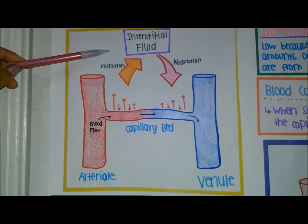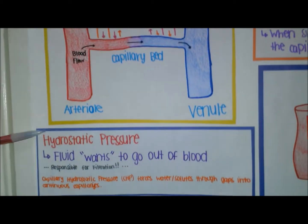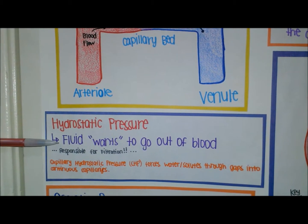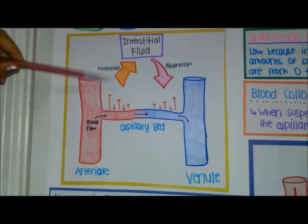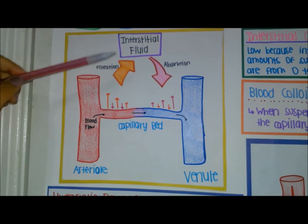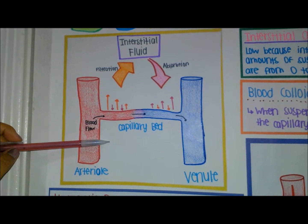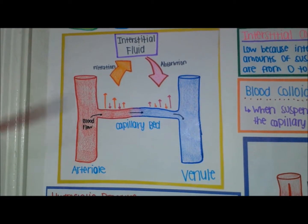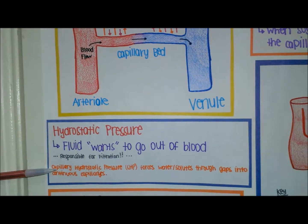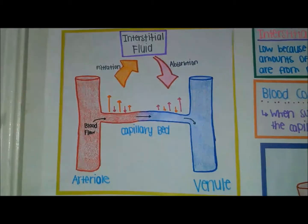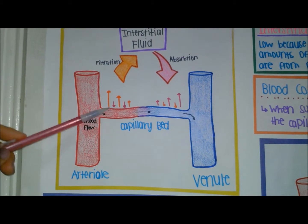As you can see, filtration occurs at the arterial end of the capillary. The driving force for filtration is hydrostatic pressure, which pushes the interstitial fluid out of the blood. Filtration pushes out the interstitial fluid because, at the arterial end of the capillary, capillary hydrostatic pressure is highest, forcing water and solutes through gaps into continuous capillaries.